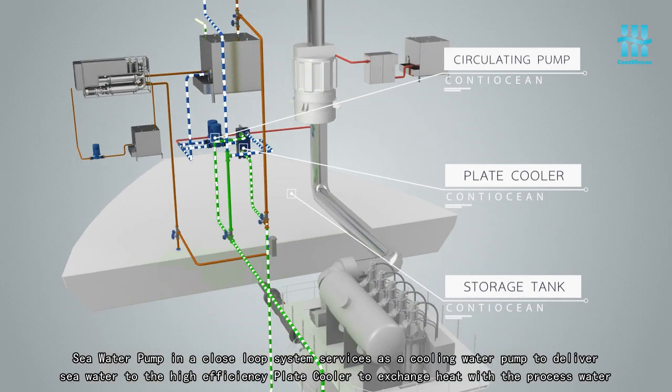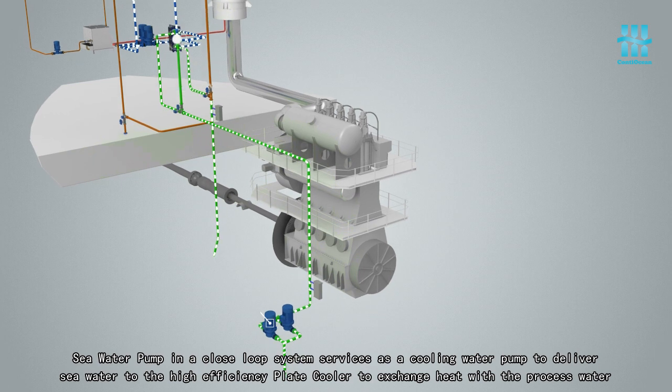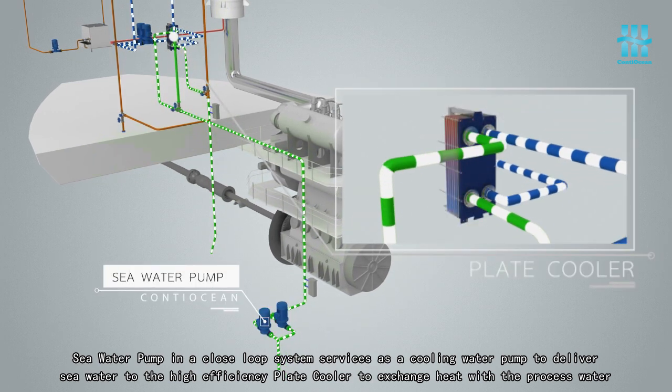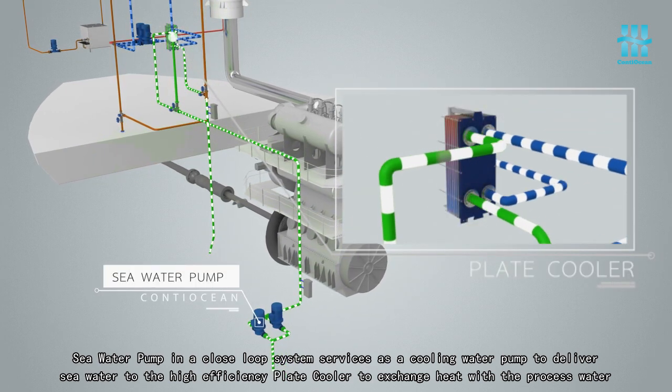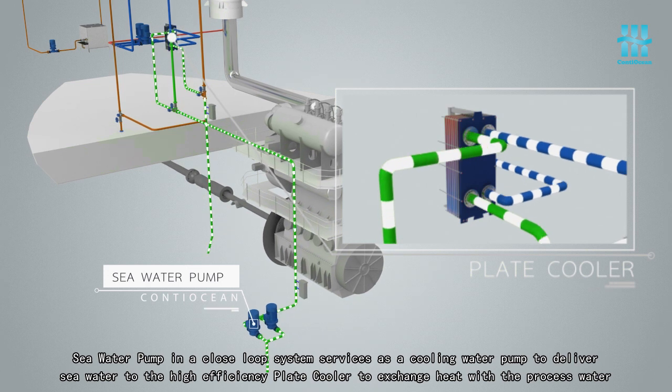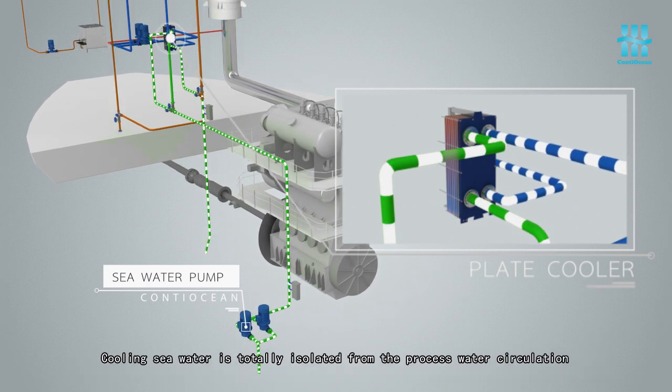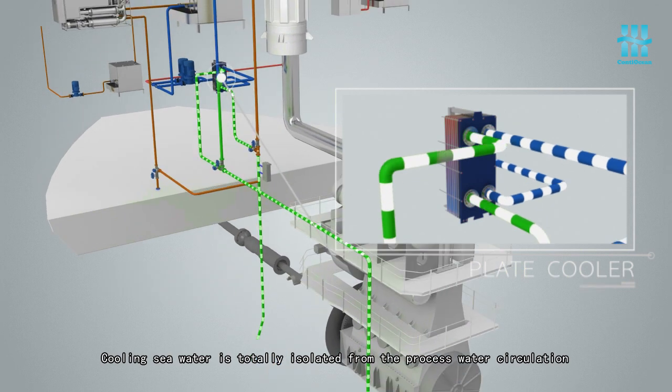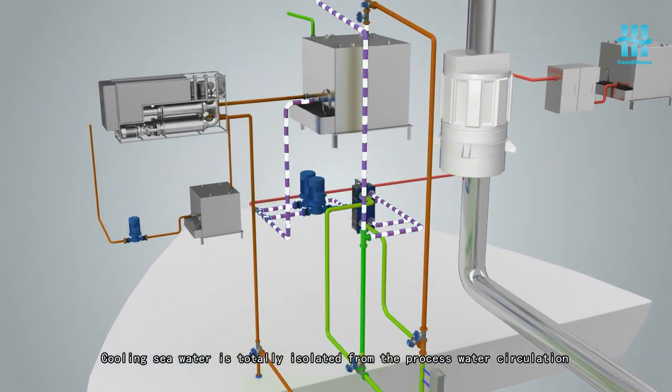Seawater pump in a closed loop system services as a cooling water pump to deliver seawater to the high efficiency plate cooler to exchange heat with the processed water. Cooling seawater is totally isolated from the processed water circulation.